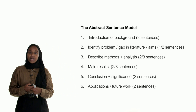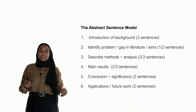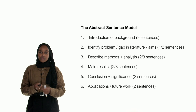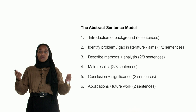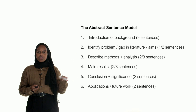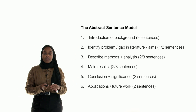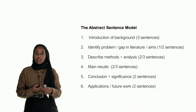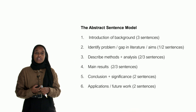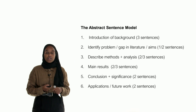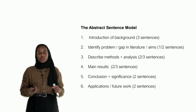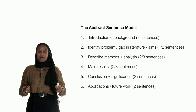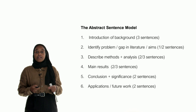I've devised something called the abstract sentence model — it's basically a guide. If you're stuck and not 100% sure how to write your abstract and don't know where to begin, follow this model and you'll be guaranteed to have an abstract that's strong and contains all the relevant information. The first one to three sentences are the introduction of the background. Then you want to identify the problem — what the gap in the literature is — and the aims.